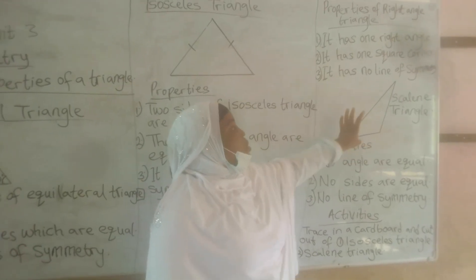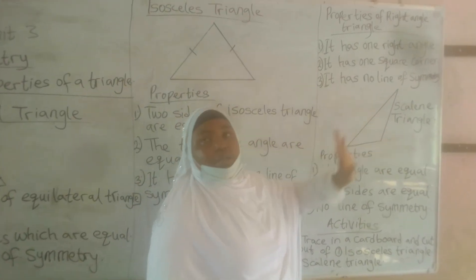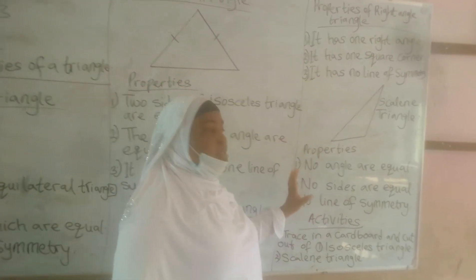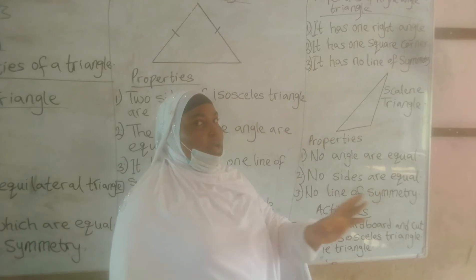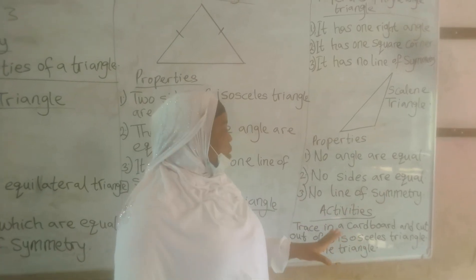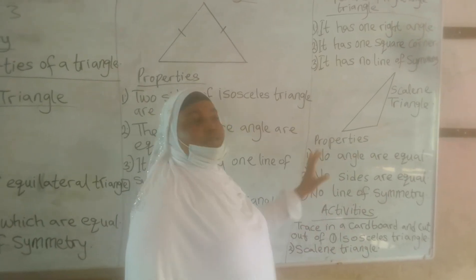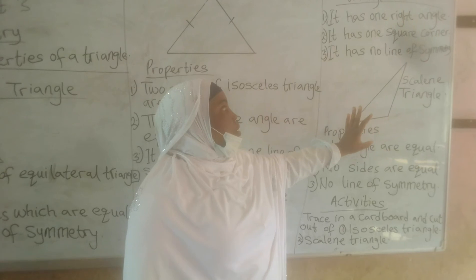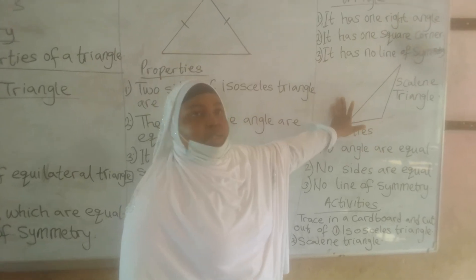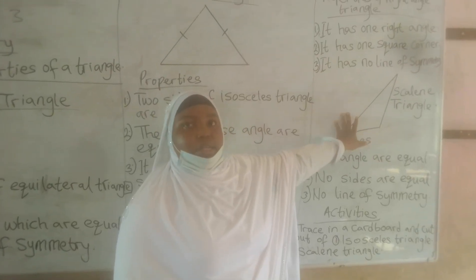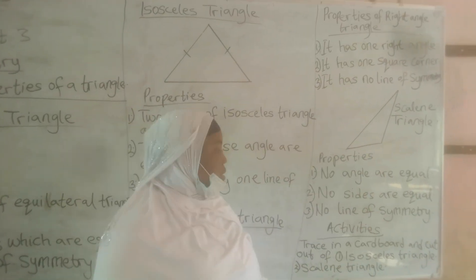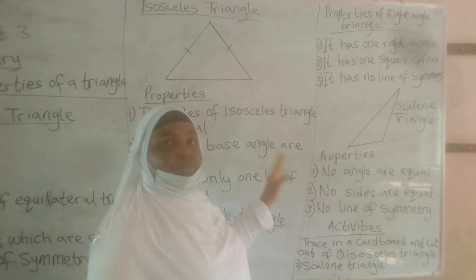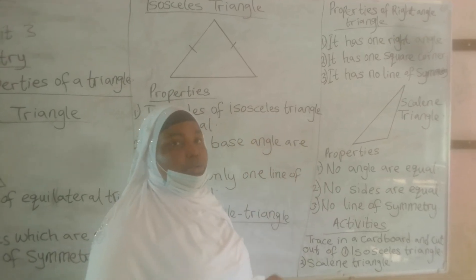Then there is the scalene triangle. In a scalene triangle, no sides are equal. Then it has no line of symmetry. Those are the properties of a scalene triangle.